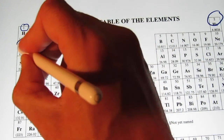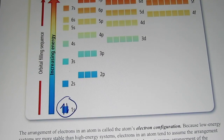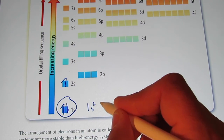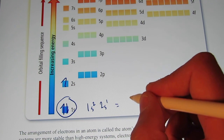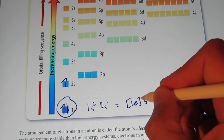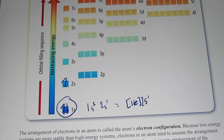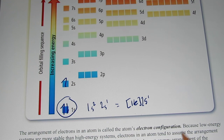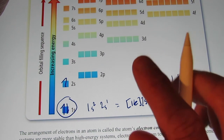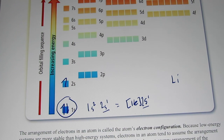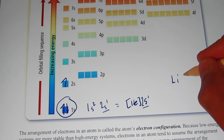The next element is lithium — atomic number three. We put an electron up in the 2s, so now we have 1s2 2s1, which is the same as saying [He] 2s1. How many valence electrons does lithium have? A valence electron is all of the electrons in the outermost energy level. The outermost energy level is the second energy level, and there is only one electron there. So lithium would have one dot.